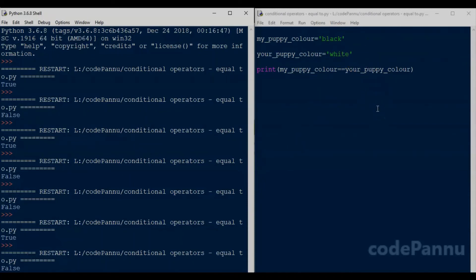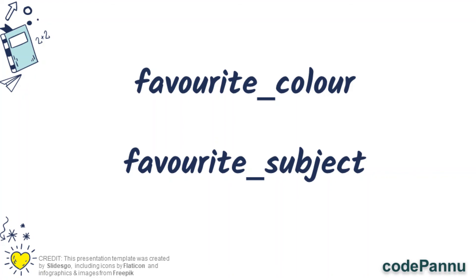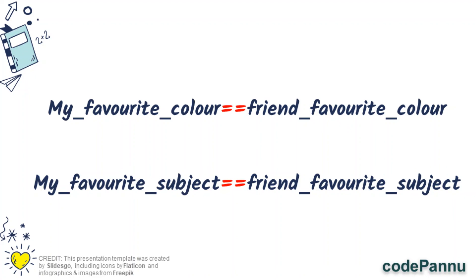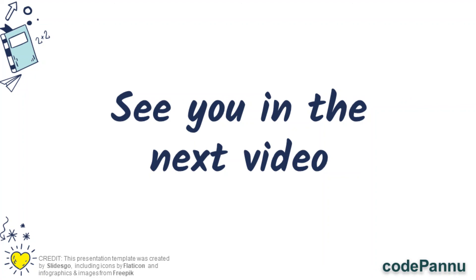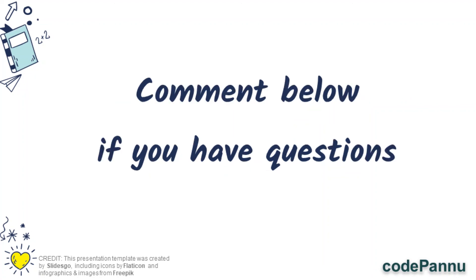The output is false because the color of the puppies is not the same. You can change the color of both puppies to the same color and run it again — the output will be true. In the next video we will see many more conditional operators. As an exercise, can you create variables like your favorite color and favorite subject, and the same variables for your friend? Then write conditions to check if the values are the same. Please try it — you will love the exercise! If you have any questions, please leave a comment and the CodePanner team will reply. See you soon!